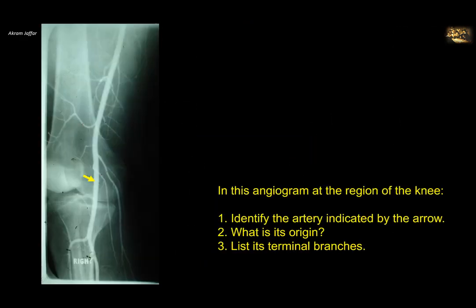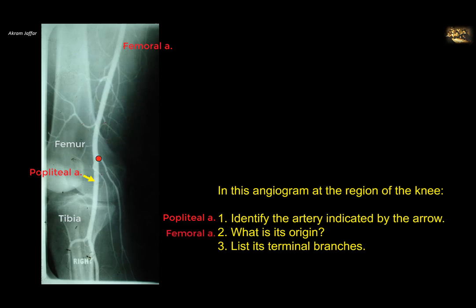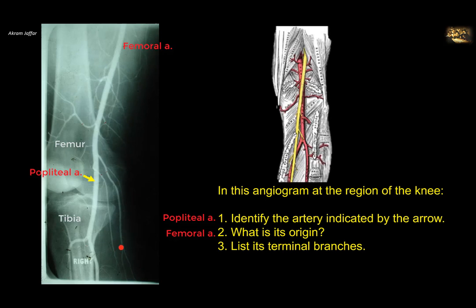In this angiogram of the knee region, identify the artery indicated by the arrow. You can see the femur, the tibia, and the intercondylar crest of the tibia. Behind the knee joint is the popliteal artery — the continuation of the femoral artery. You can see multiple genicular branches forming the genicular anastomosis, as well as muscular branches. Below the knee joint and distal to the attachment of the popliteus muscle, it divides into the anterior tibial and posterior tibial arteries, which are its terminal branches.